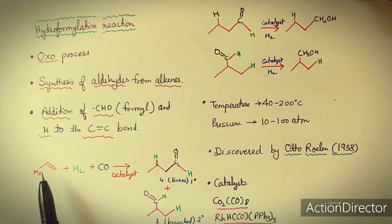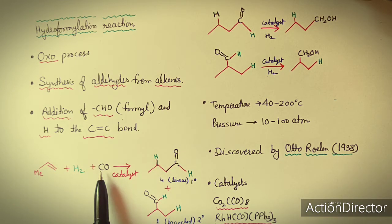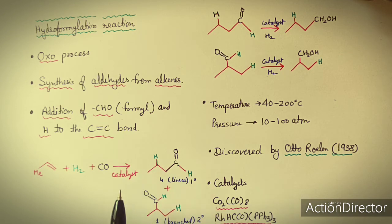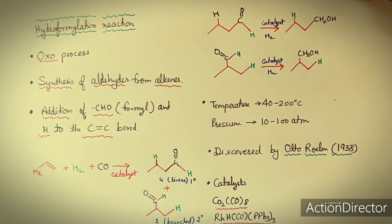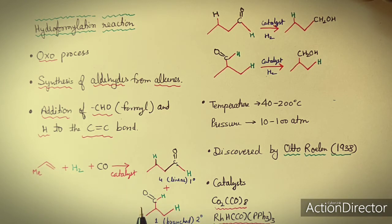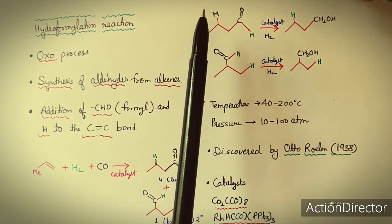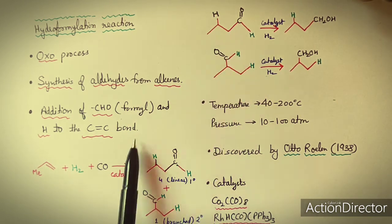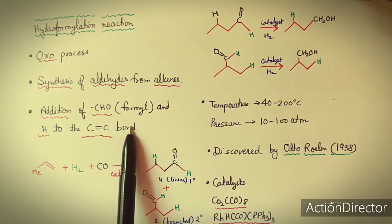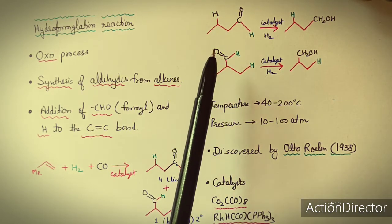This olefinic compound reacts with hydrogen and carbonyl in the presence of a catalyst to form two kinds of isomers: a linear type, which is the primary aldehyde, and a branched type of aldehyde. These two products form in a ratio of 4:1, with the linear aldehyde in higher amount and the branched one in lower amount.